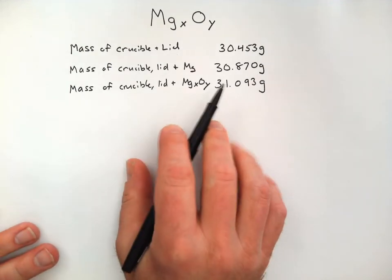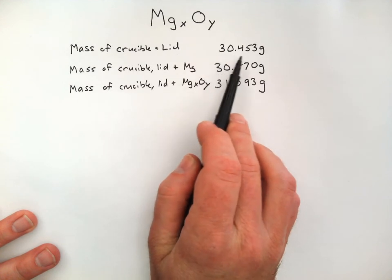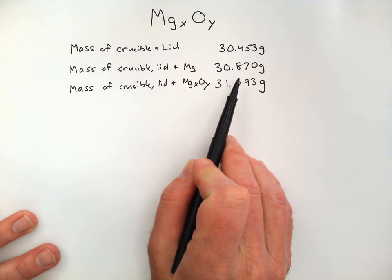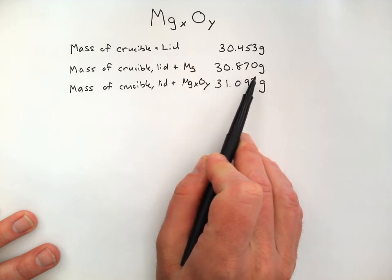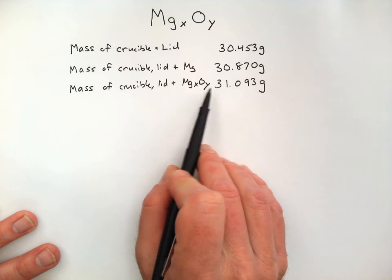So, with the three masses that I got in the laboratory, my crucible and lid weighed 30.453 grams, we added the magnesium to it, and the mass went up to 30.870 grams, and then we reacted it with oxygen, so the oxygen was added in.